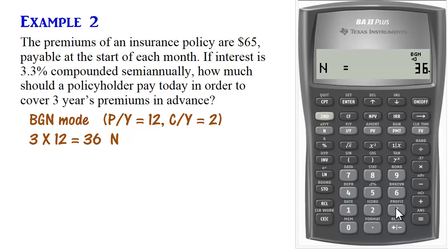Interest is 3.3, so we do 3.3. Present value is what we're trying to compute. How much should the policyholder pay today? So we skip that and move on to payment.